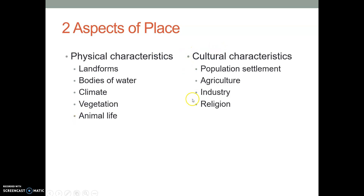With cultural characteristics — I made a goof here — food that's grown would be agriculture because people grow the food. The industry, what do people do for a living? What's their religion? Is it rural or urban? A lot of times when we say something is rural, meaning there's not a whole lot of people that live there, you think of that as a physical feature, but it's not, because it's describing the number of people in an area — that would be a cultural characteristic. Physical is describing naturally occurring elements; cultural is describing the groups of people that live there.